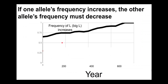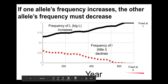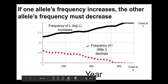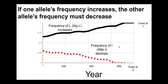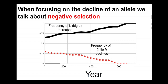Positive selection refers to changes in terms of the big L allele, which is beneficial to fitness. However, anytime the big L allele increases, the little l allele is going to decrease. If we focus our analysis on the little l allele, we could say it is fixed at zero while the big L is fixed at one. Individuals who are little l little l have lower fitness — they're lactose intolerant — so there is negative selection against the little l allele. This is also a form of directional selection, just from the opposite perspective.